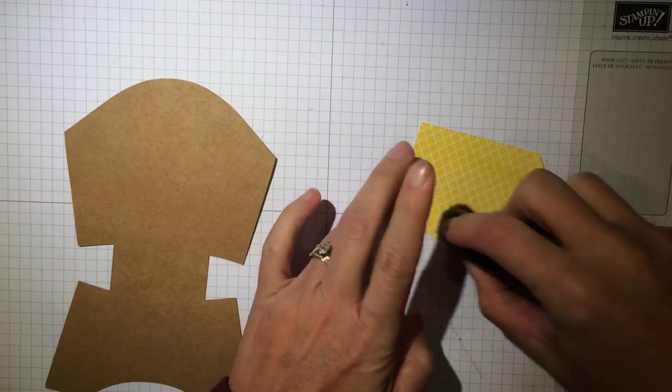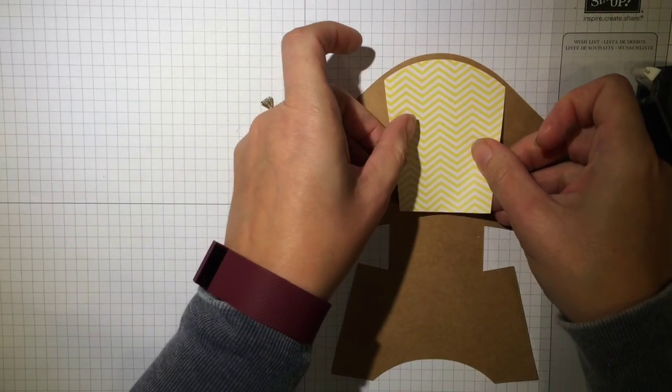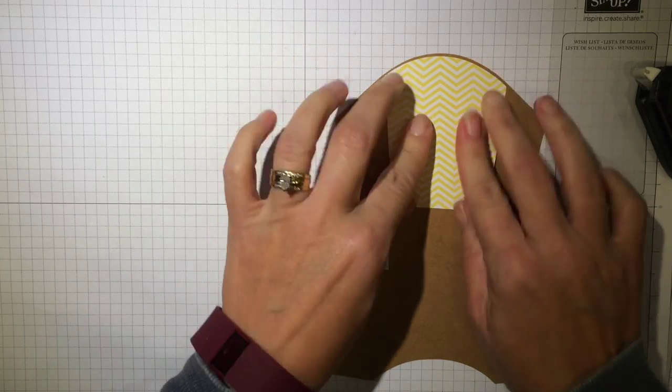Now put some Fast Fuse. You're going to adhere this. I liked it just along the edge a little bit where you could see kind of a border.